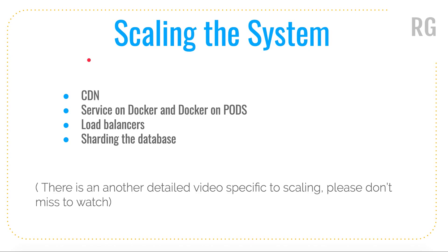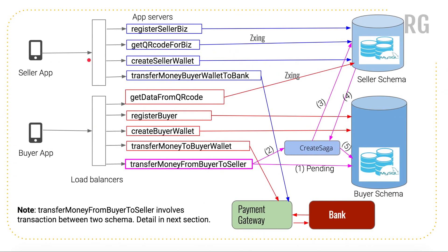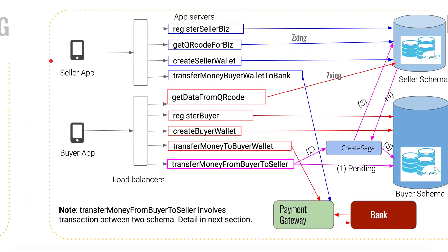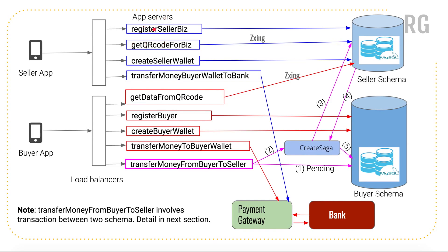Let's talk about scaling the system — we can apply scaling at multiple locations. The first is CDN (Content Delivery Network). If your application has a lot of static content, images, or JavaScript, you can put it directly in the CDN. The client application instead of going to the server every time can fetch from the nearest CDN location, which improves performance.